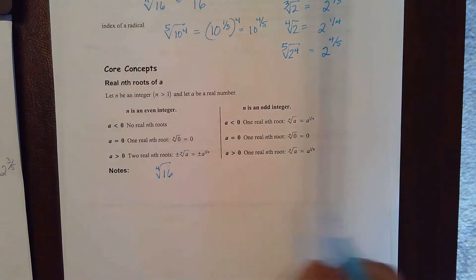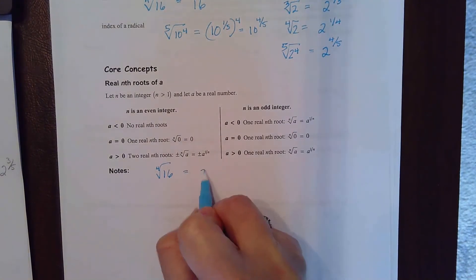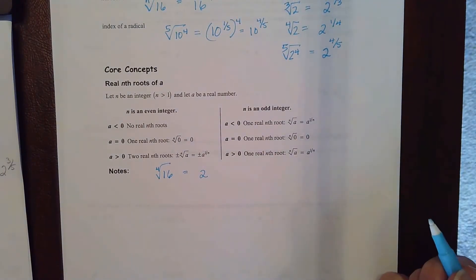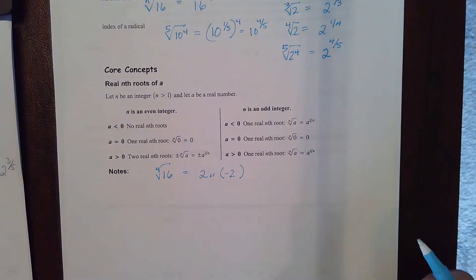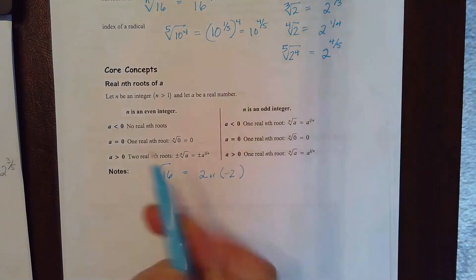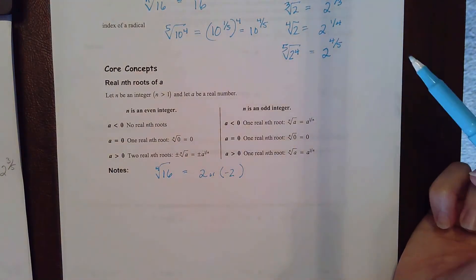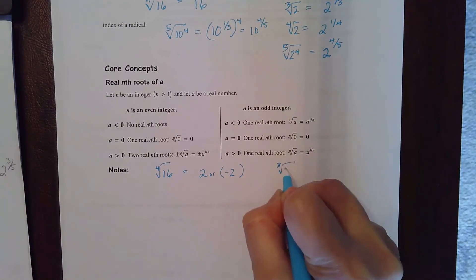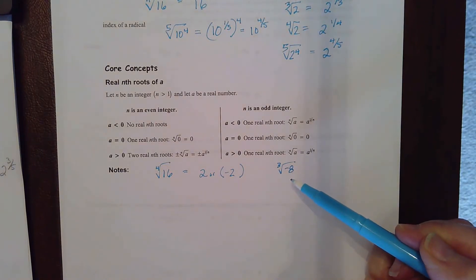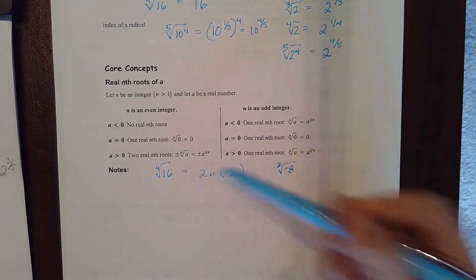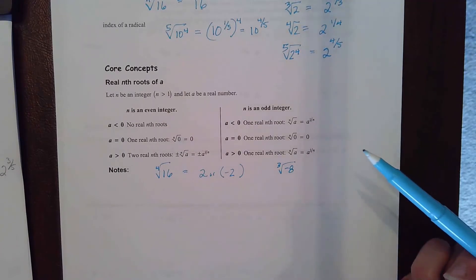Think about what the fourth root of 16 is: what number multiplied by itself four times gives me 16? The answer is 2 — two times two times two times two is 16. But negative two could also work, because negative two times negative two times negative two times negative two is also 16. So anytime you have an even root there are really two possible answers. An odd root is not quite the same — if I had the third root of negative eight, there's only one answer, and you can take the odd root of a negative number.